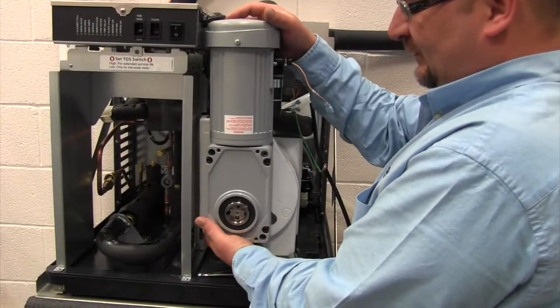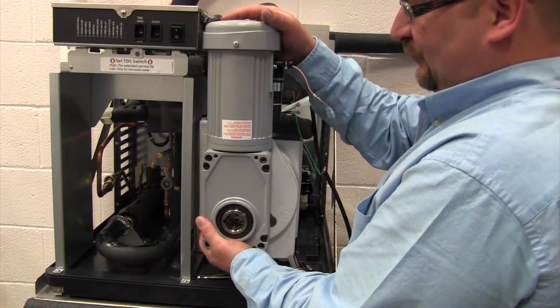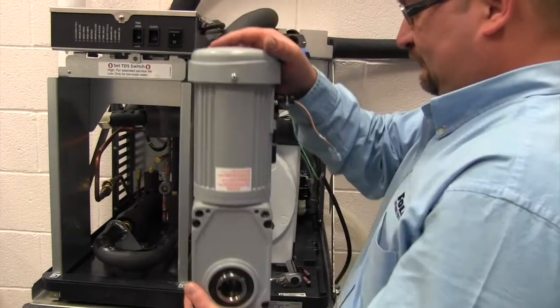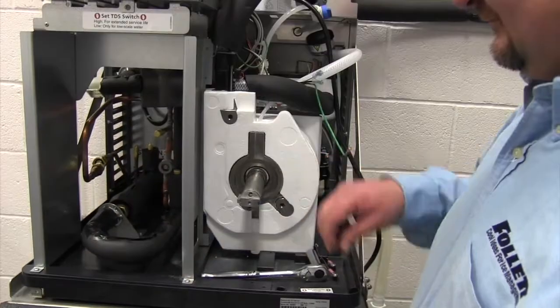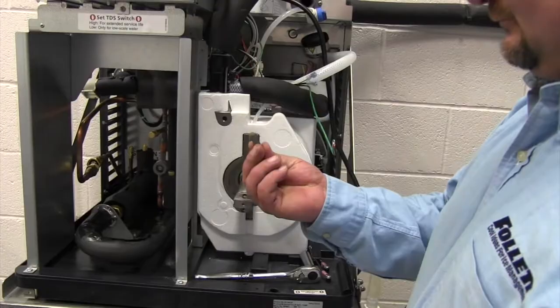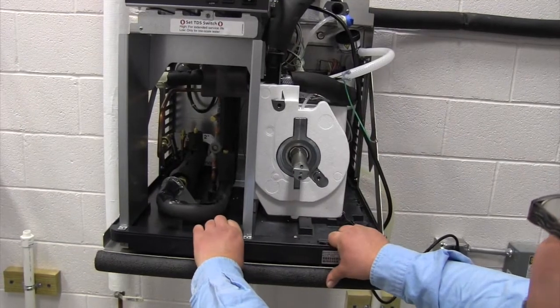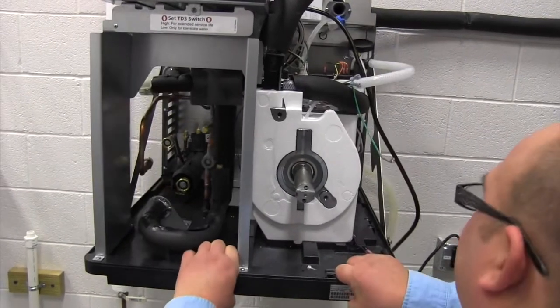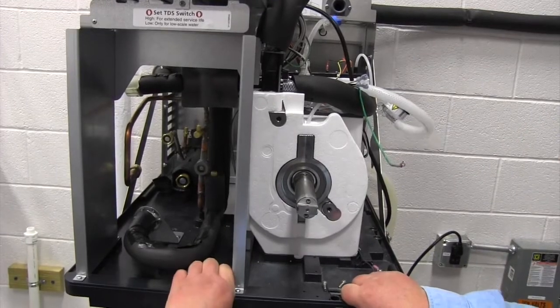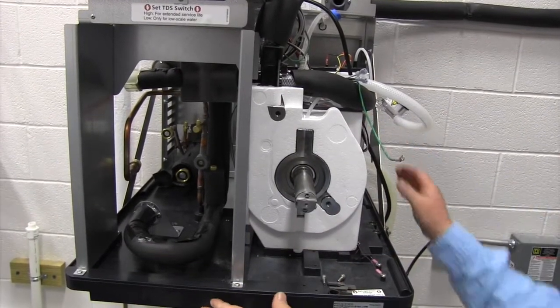When pulling your gear motor off, be cautious not to lose your wood drift key. Now we can pull our machine forward so that we have access to the items in the rear of the machine.